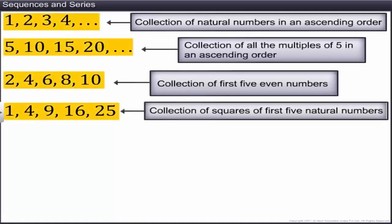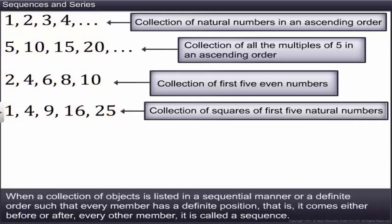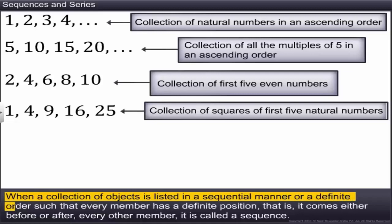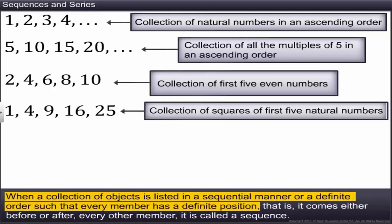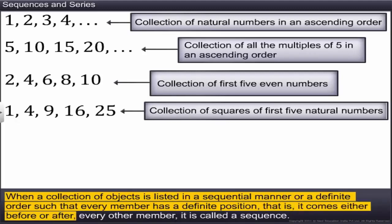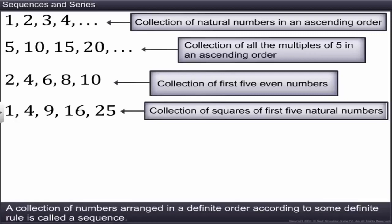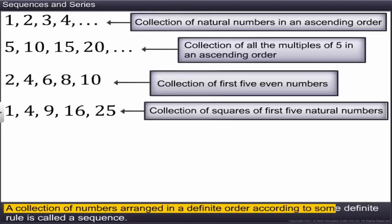In each collection, there is a specific rule or order in which the numbers are listed. When a collection of objects is listed in a sequential manner or a definite order, such that every member has a definite position — that is, it comes either before or after every other member — it is called a sequence. A sequence can also be defined as a collection of numbers arranged in a definite order according to some definite rule.